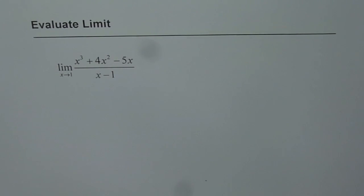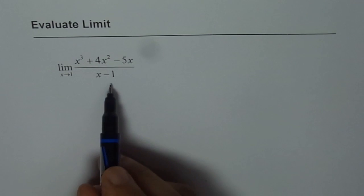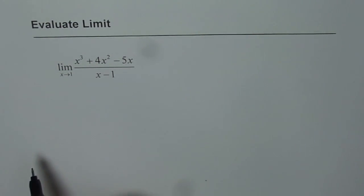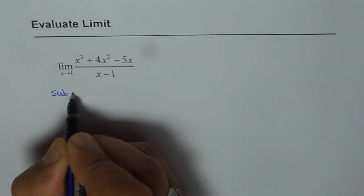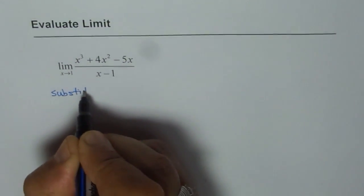Evaluate limit of x cubed plus 4x squared minus 5x divided by x minus 1 as x approaches 1. So let's first substitute 1 and then check our answer.